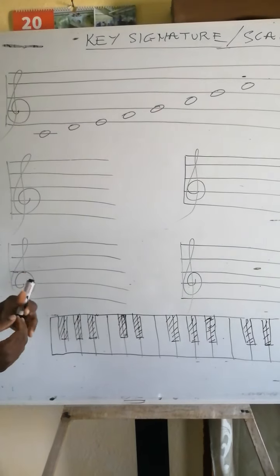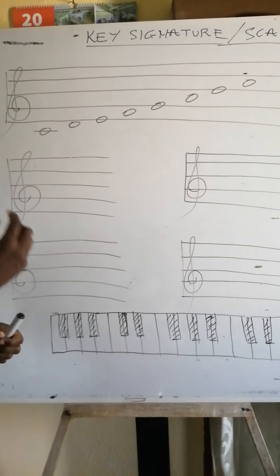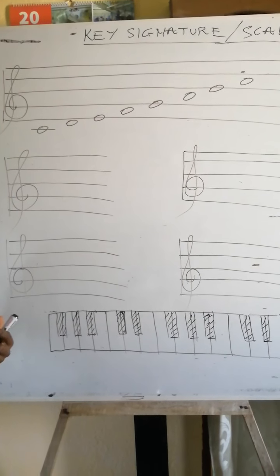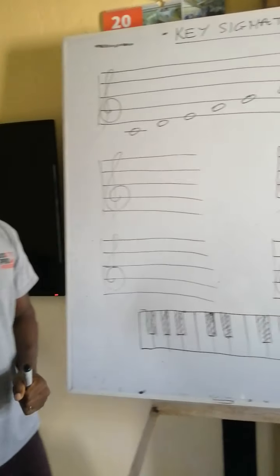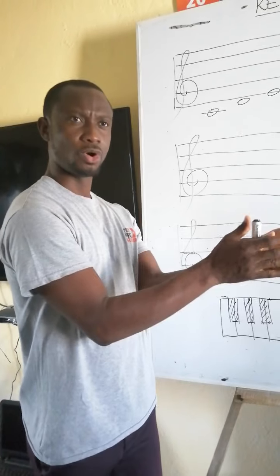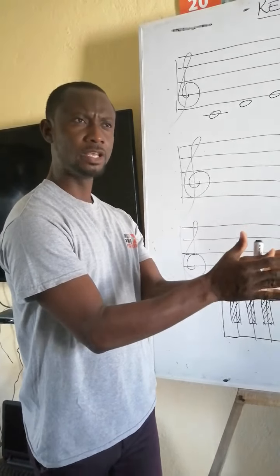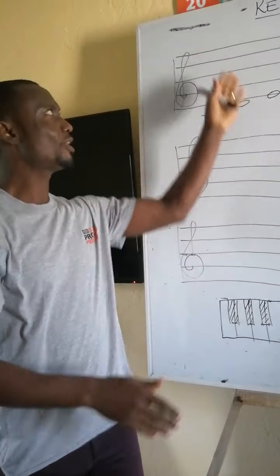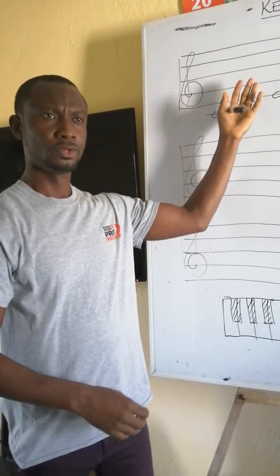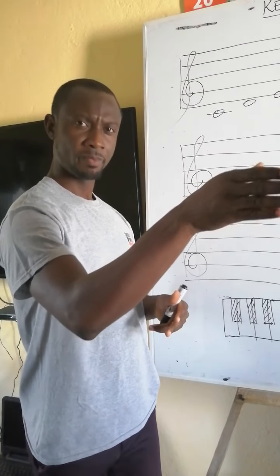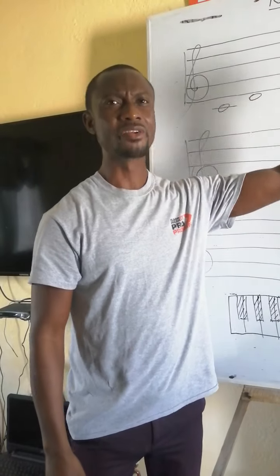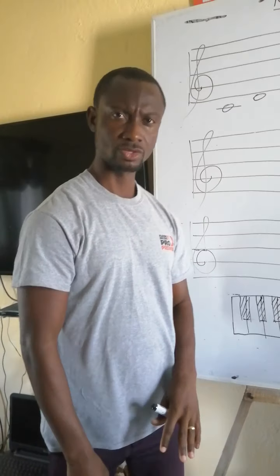I want us to know or study how we came by our key signatures. What is a key signature? A key signature is the assembly of accidentals at the beginning of every staff to alert or to inform the performer as to which notes are raised or lowered in the song.